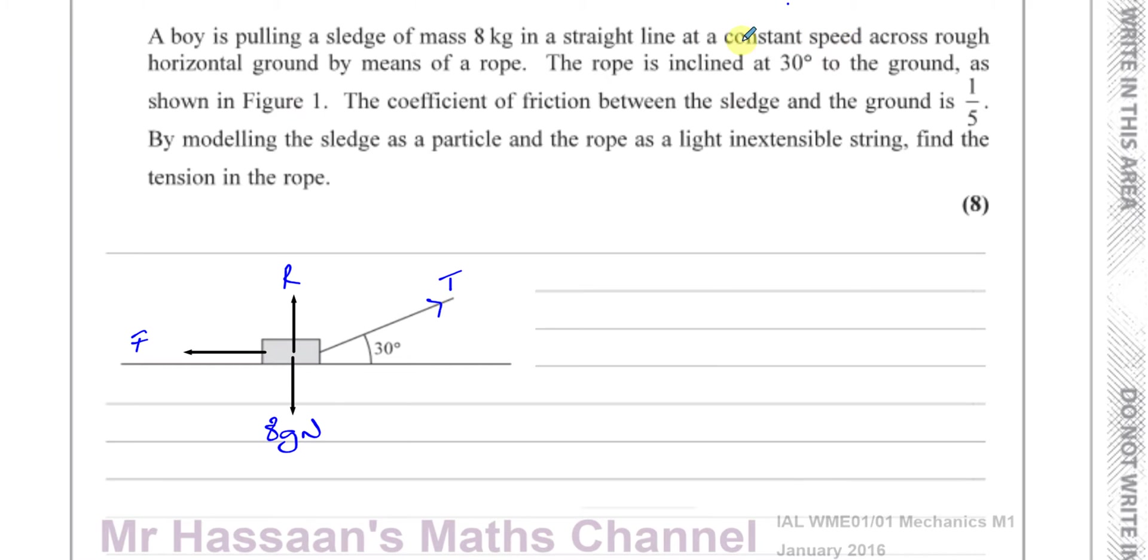Now, one of the key words in this question is this phrase: constant speed. Constant speed means it's not accelerating. The acceleration is equal to zero. It's moving but not accelerating. That means the resultant force on this is equal to zero. The forces are balanced out on it. So if it was at rest or going at constant speed, that means the resultant force is equal to zero. That's a key part of this question.